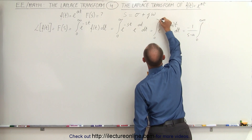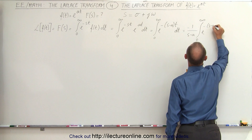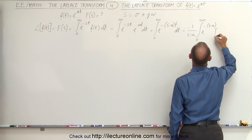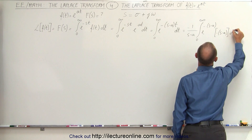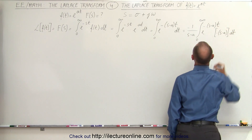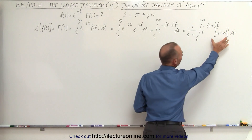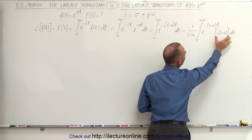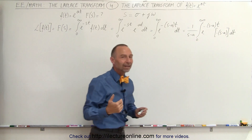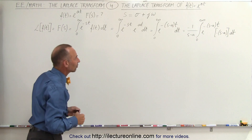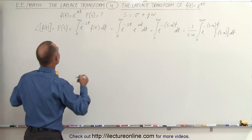I didn't put the limits in here. This is e to the minus s minus a times t, and of course I need the t right there as well. In order to integrate that, I need to have the proper differential. I multiply everything by minus the quantity s minus a, and I have to divide by minus 1 times s minus a. Now I can go ahead and integrate.